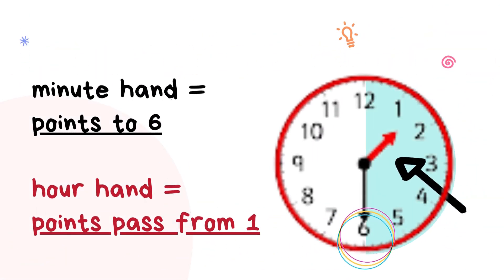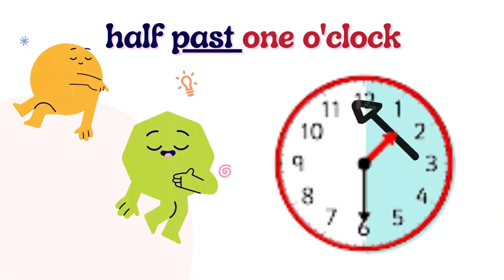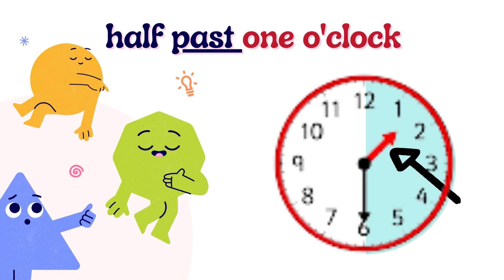Next, let's look at this one. The minute hand has moved from number 3 and is now pointing to number 6, and we have the shaded portion half of the clock face. The hour hand points past from number 1. So on this clock face, it's telling the time of half past 1 o'clock. Say with me: half past 1 o'clock.